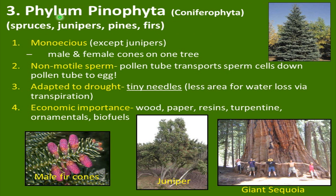A group we're very familiar with here in Flagstaff is the phylum Pinophyta, or Coniferophyta — these are the spruces, junipers, pines, and firs. They're monoecious, except for junipers, so they have male and female cones on one tree. They have non-motile sperm, so a pollen tube transports sperm cells to the egg. They're adapted to drought, with very tiny needles — less area for water loss via transpiration. They have enormous economic importance: wood production is one of the founding reasons why Flagstaff exists in the first place. Also paper, resins, turpentine — which is a type of paint thinner — ornamental trees, and biofuels.